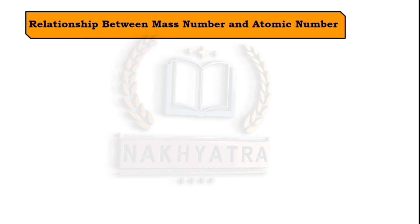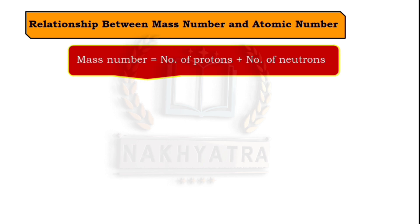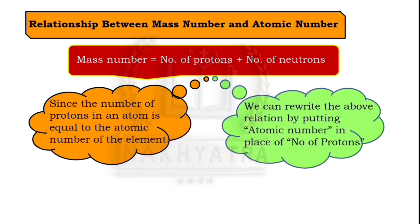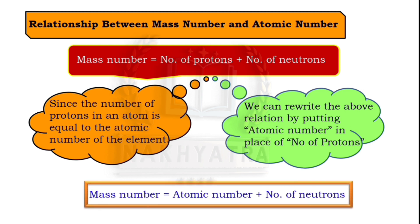Now see the relationship between mass number and atomic number. Mass number equals the number of protons plus the number of neutrons. Since the number of protons equals the atomic number, we can rewrite this as: Mass number = Atomic number + Number of neutrons, i.e., A = Z + number of neutrons.